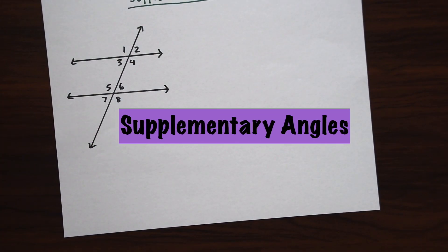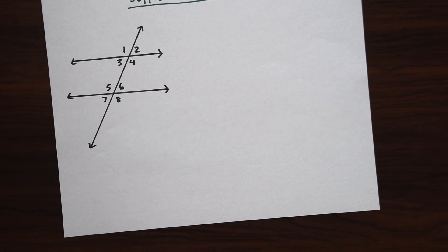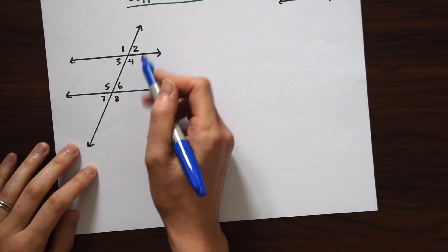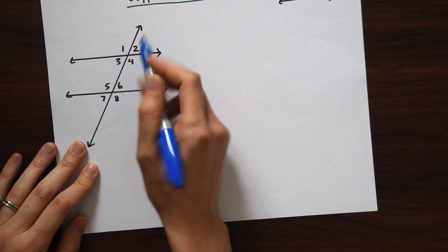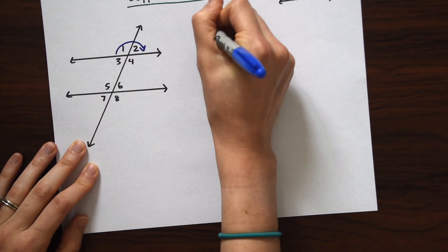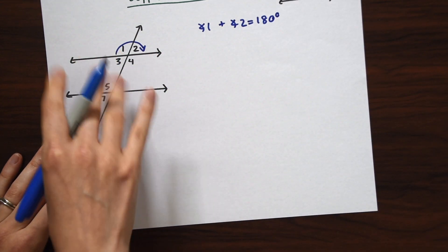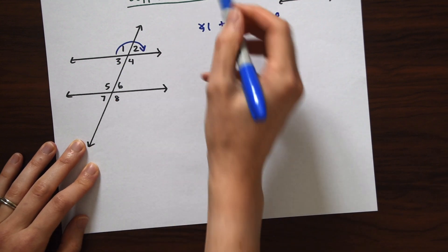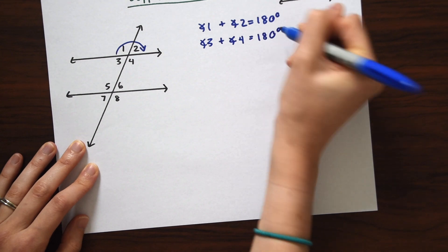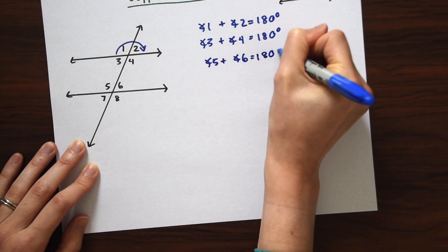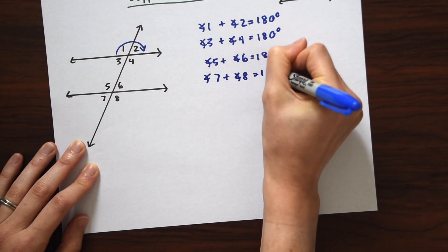The last thing we're going to look at is supplementary angles, which are angles that add to 180 degrees — these aren't congruent like the ones we just looked at. Since there are a lot of lines here, there are a lot of supplementary angles. Along the top parallel line, angle 1 plus angle 2 equals 180 degrees, and angle 3 plus angle 4 also equals 180 degrees. Down on the lower parallel line, angle 5 plus angle 6 equals 180 degrees, and angle 7 plus angle 8 equals 180 degrees.